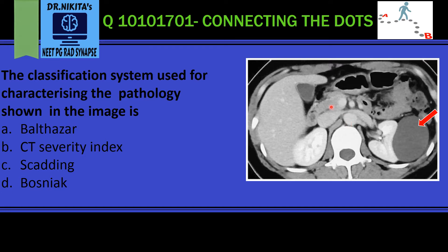To look at the anatomy briefly: this is the liver on the right side. These bilateral symmetrical organs in the abdomen are the kidneys, and they are enhancing because they excrete the contrast.